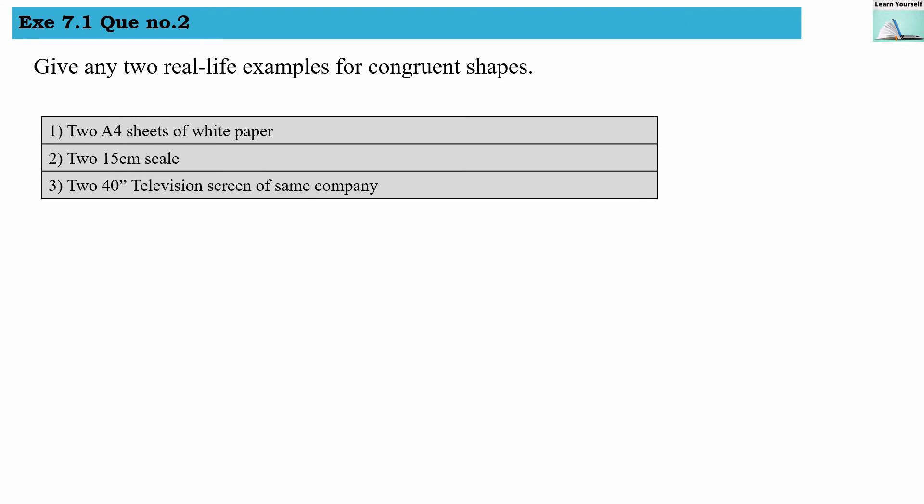Exercise 7.1, question number 2: give any two real-life examples for congruent shapes. First: two A4 sheets of white paper from the same company. Second: two 15-centimeter scales. Third: two 40-inch television screens from the same company. The size and measure will be the same for all three examples.